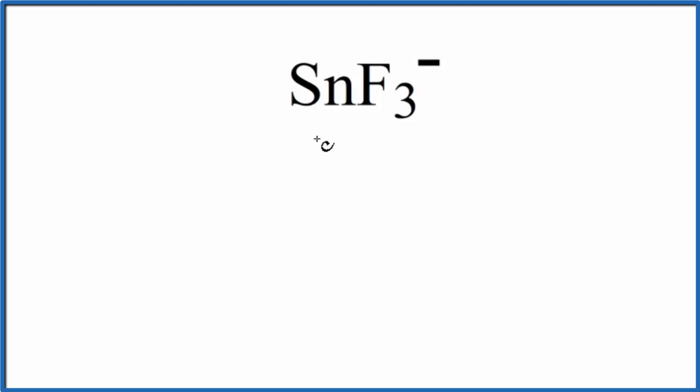Tin, that's in group 14, sometimes called 4A. We're going to assume that it has 4 valence electrons. Fluorine group 17, sometimes called 7A. 7 valence electrons, but we have 3 fluorine atoms.